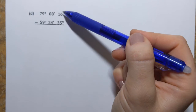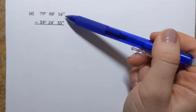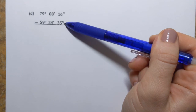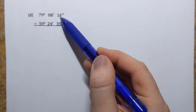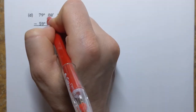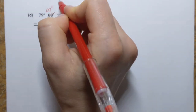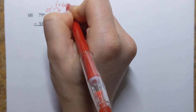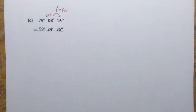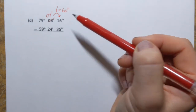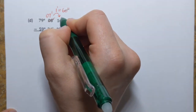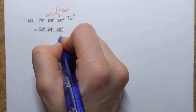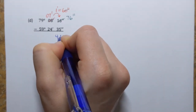Here's the last example: subtracting two angle measures. Starting on the right: 16 seconds minus 35 seconds — not enough. So I donate one minute, leaving 7 minutes, and convert that minute to 60 seconds. Total seconds: 60 plus 16 equals 76 seconds. 6 minus 5 is 1, 7 minus 3 is 4 — that's 41 seconds.